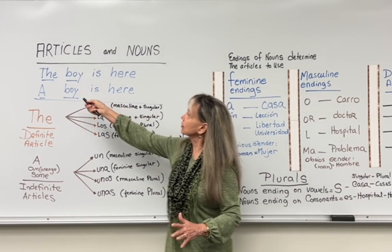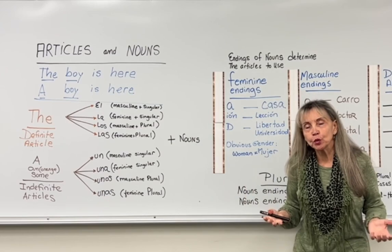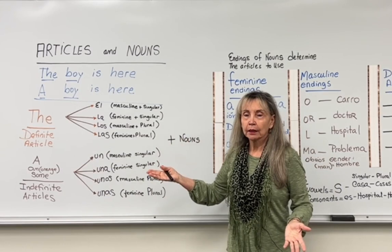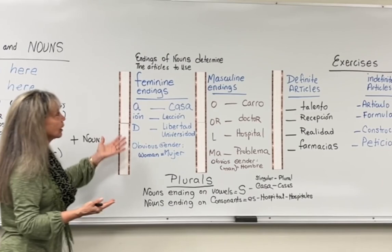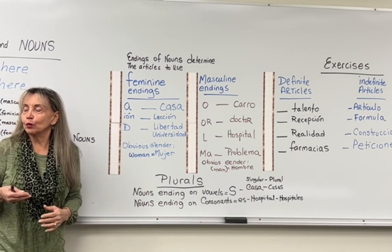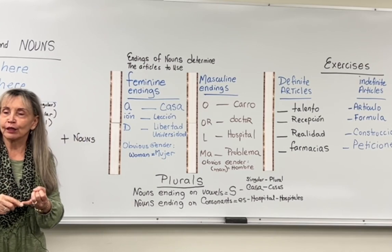Up until this point, we have covered the two article parts of an English sentence. You may ask: how do I choose? I know that each one translates four things — definite and indefinite — but how do I choose one of them? We are going to move to the next part: the nouns. The nouns are going to determine which article you are going to use. Everything in Spanish has to do with an ending, and an ending will determine if your article is feminine or masculine.